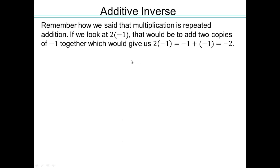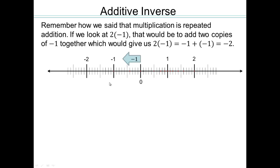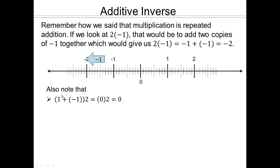Take a look at 2 times negative 1. We're going to say 2 times negative 1 means 2 copies of negative 1, so it's negative 1 plus negative 1, giving you negative 2. Another way to visualize negative numbers is on the number line. We have 2 copies of negative 1: negative 1 distance once, and negative 1 distance twice. When you're going negative 1, you're going to the left.